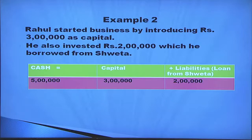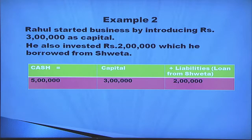Another example: Rahul started business by introducing three lakh as capital. He also invested two lakh rupees which he borrowed from Shweta, so this borrowing is a liability or loan from Shweta. Capital is introduced in the form of cash — rupees three lakh plus two lakh, that is five lakh, is coming into the business as cash. Assets equals capital plus liabilities, that is cash five lakh equals capital three lakh plus liabilities two lakh.